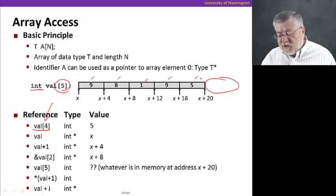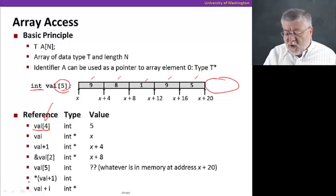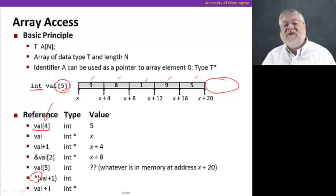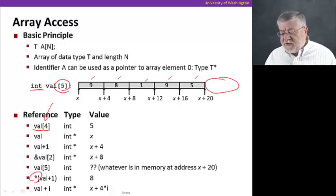Let's take a look at the next example. We're doing val plus one inside the parentheses. That's again that address x plus four. Then we're dereferencing it with the star operator. We're saying, what is the value at x plus four? The value at x plus four is the integer eight. And then finally, our last example, val plus i, an arbitrary index. That is multiplied by four to yield the address x plus four times i. That's pretty straightforward.